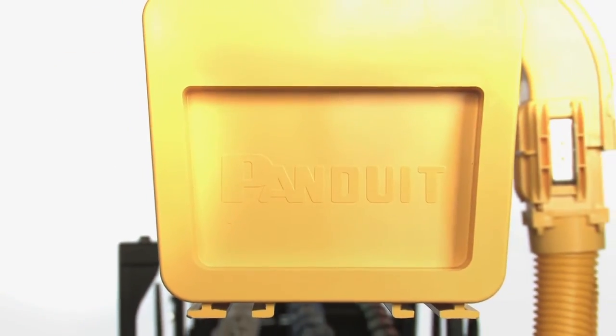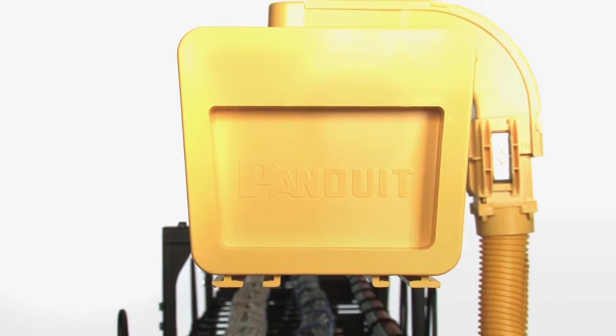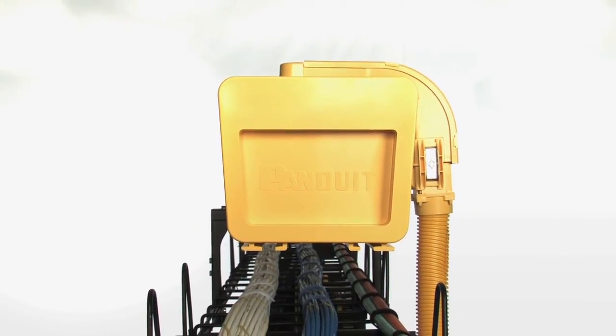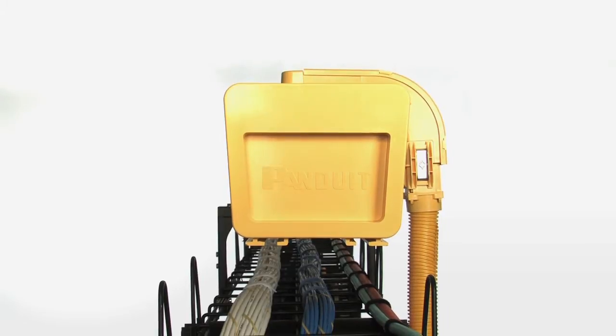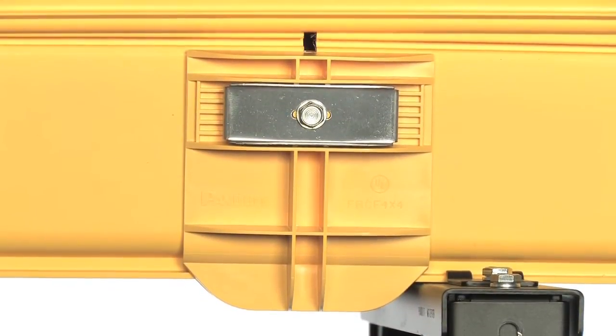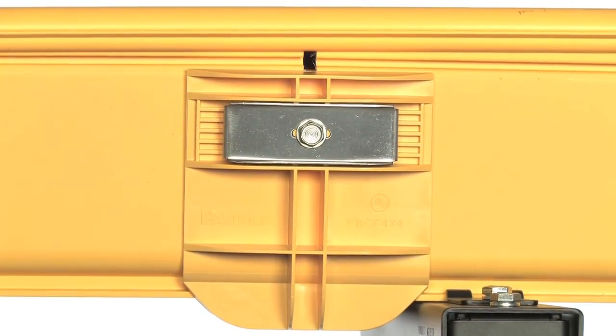The FiberRunner Cable Routing System is a fully enclosed modular plastic pathway system designed to protect cables. Various components are offered that facilitate ease and speed of installation, such as quick lock couplers, which require no tools or preparation for joining two sections of pathway or fittings.